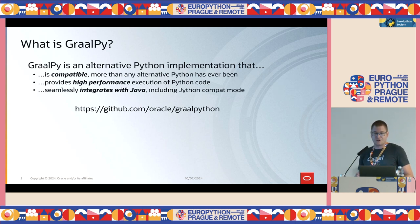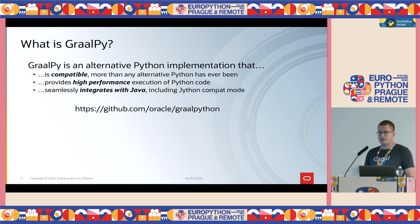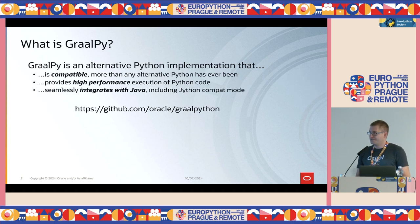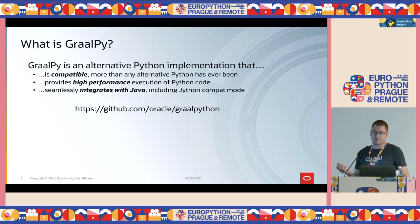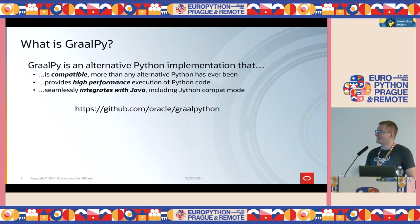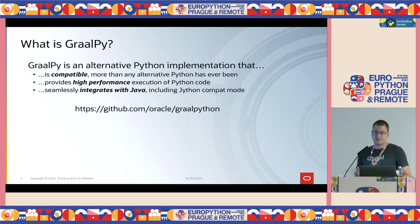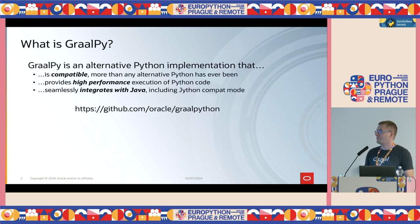So what is GraalPy? It's a compatible implementation of Python, compatible to the reference CPython implementation. We believe that we are more compatible than any alternative Python has ever been — I will show more details why we think this is the case. GraalPy provides high performance execution of Python code, and GraalPy seamlessly integrates with Java, including Jython compatibility mode.